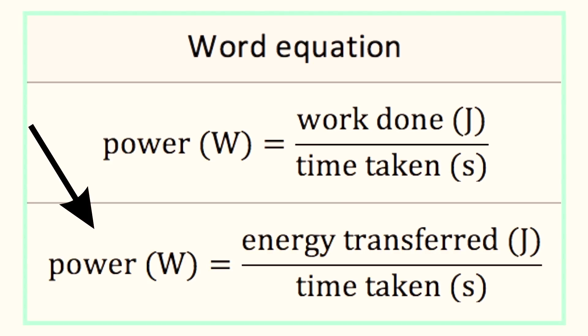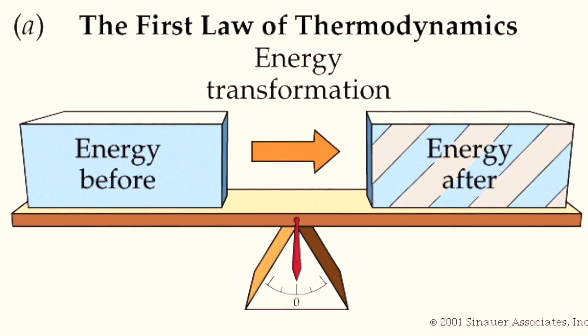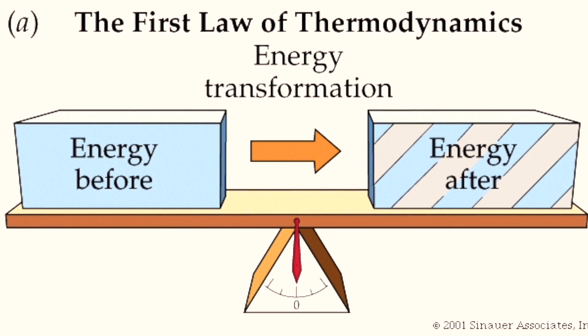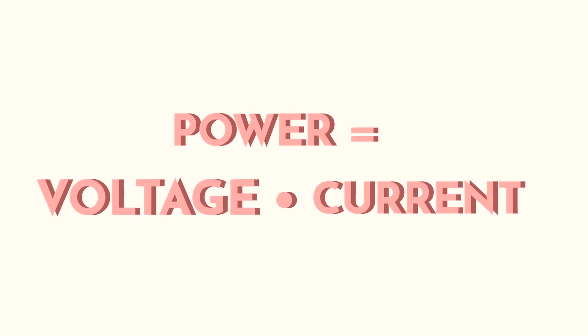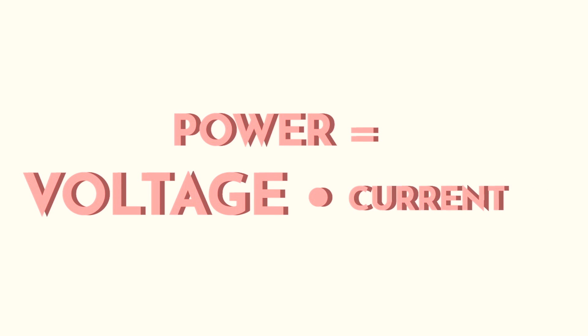Power is energy over time. Energy, according to the first law of thermodynamics, cannot be created or destroyed. So if we look at the power equation where power equals voltage times current, and we step up the voltage of an AC wave via transformer, in order for the power to stay the same, the current needs to decrease.